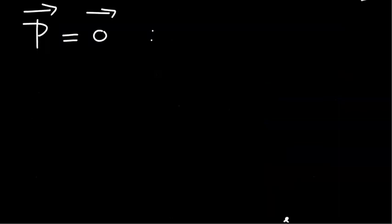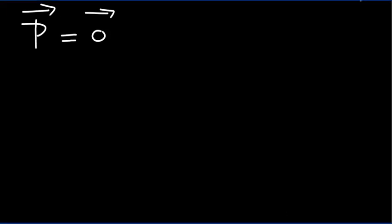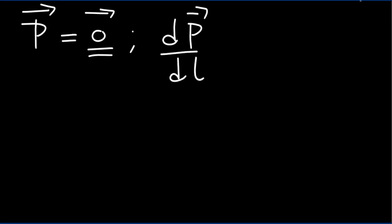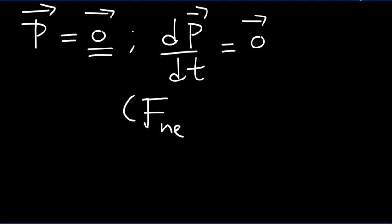The implication of having zero linear momentum for a system is as follows. When a system's linear momentum is zero, which is a constant value, the rate of change of the linear momentum is also zero. That means the net force acting on the system is also zero.